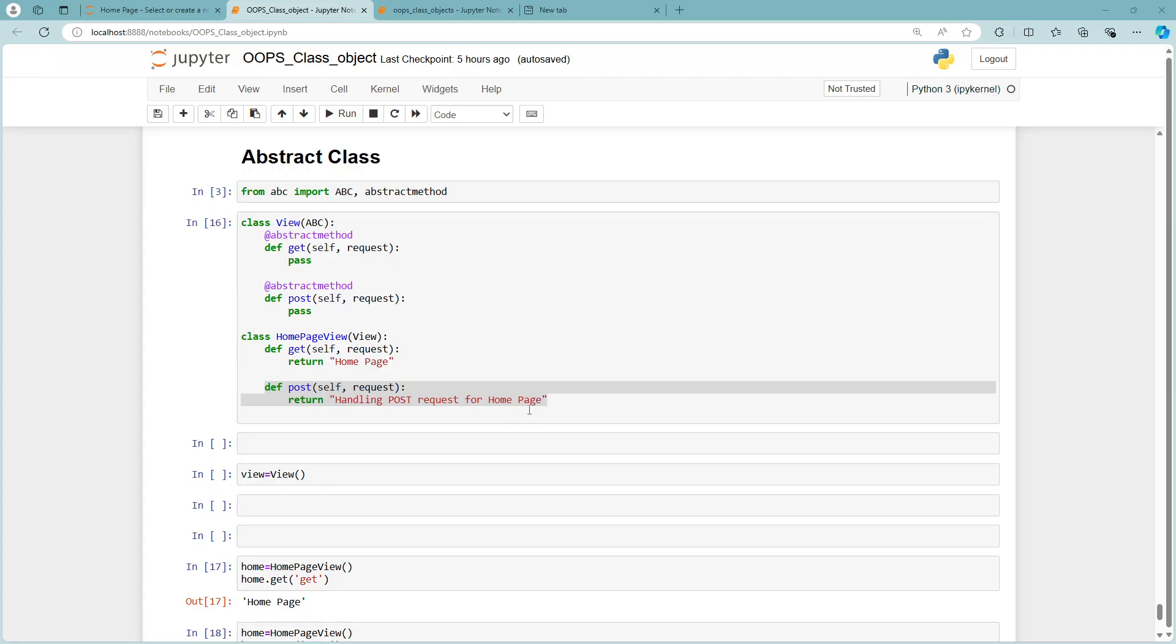Here you can see I have imported the ABC method. I'm creating a class called View, and I'm creating a child class HomePage View. I'm creating a function called get. I'm not giving any functionality or business logic here, but I'm just returning 'home page'.